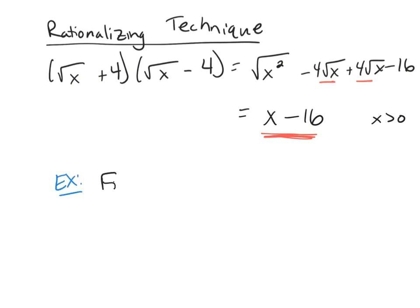Let's look at: find the limit as x goes to 0 of square root of x plus 1 minus 1 over x.